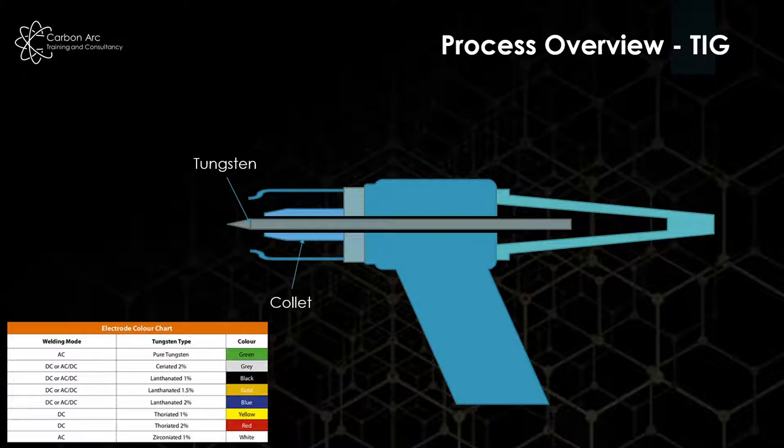We have a collet that clamps down around the tungsten and holds it in place, as well as allowing the electricity from the system to pass through into the tungsten. Our ceramic cup is a relatively fragile component, especially when hot, but it helps guide our shielding gas towards the welding arc.